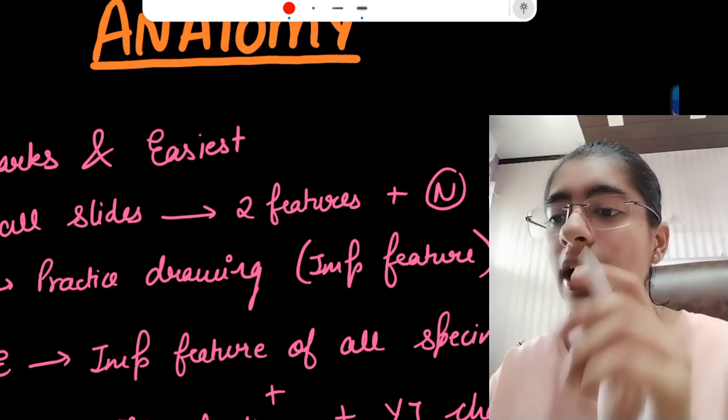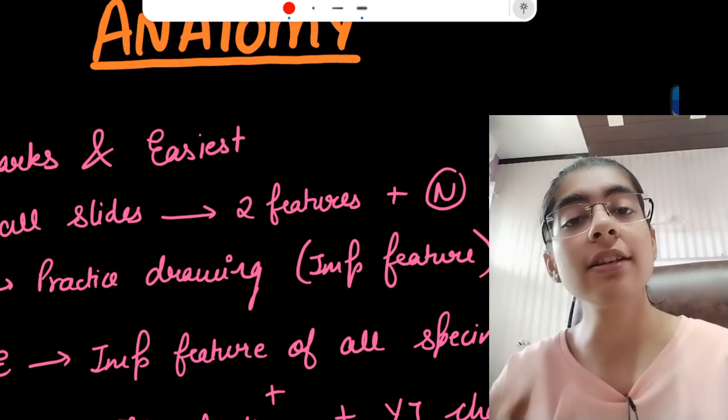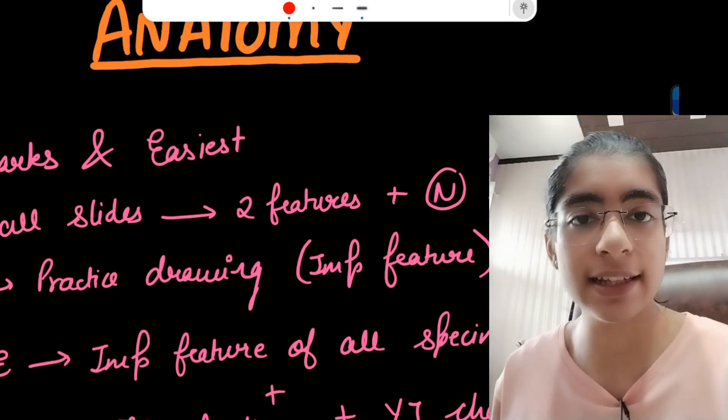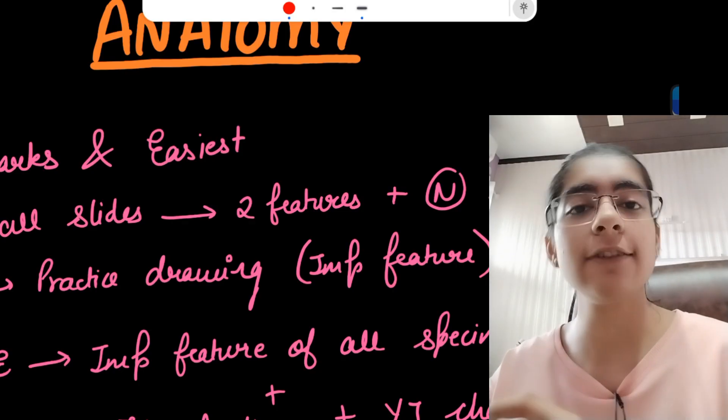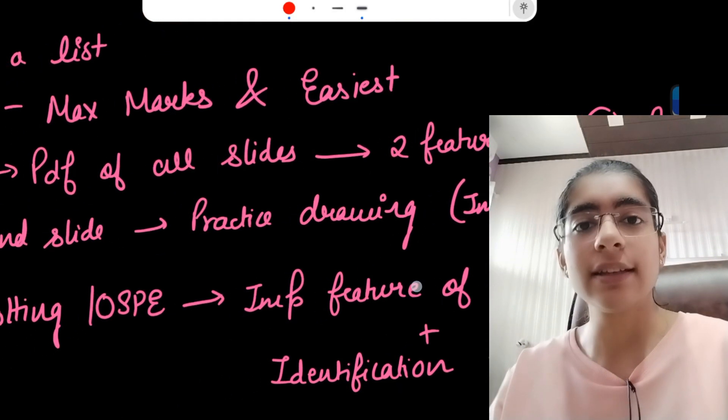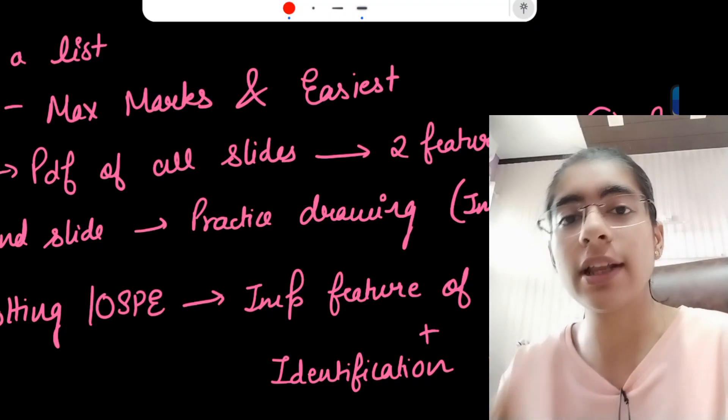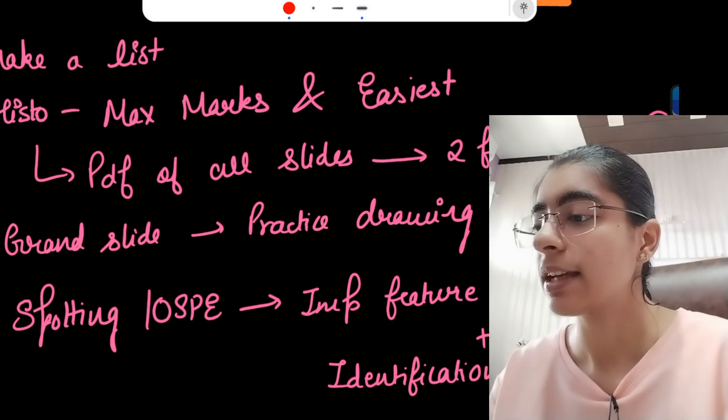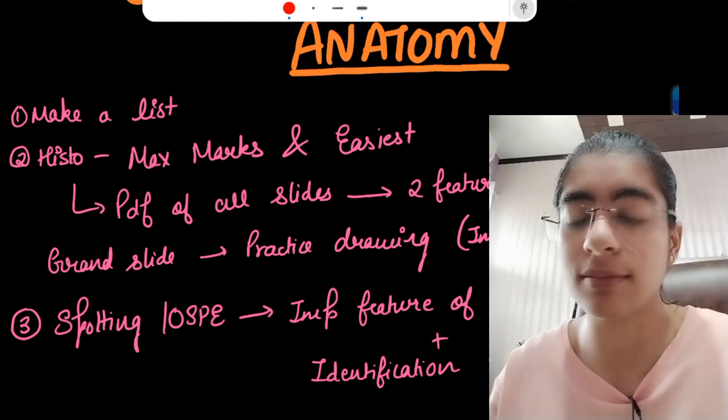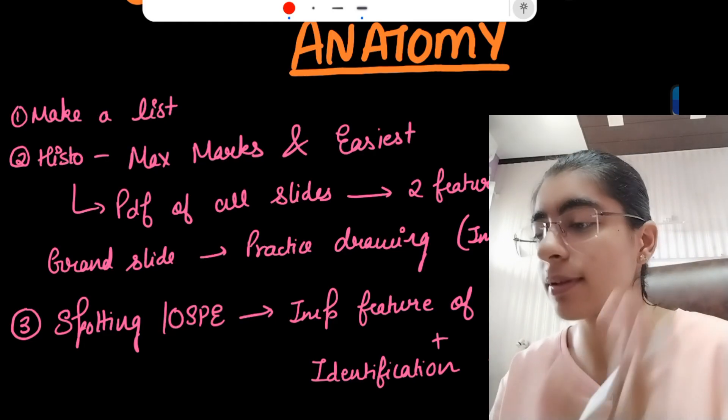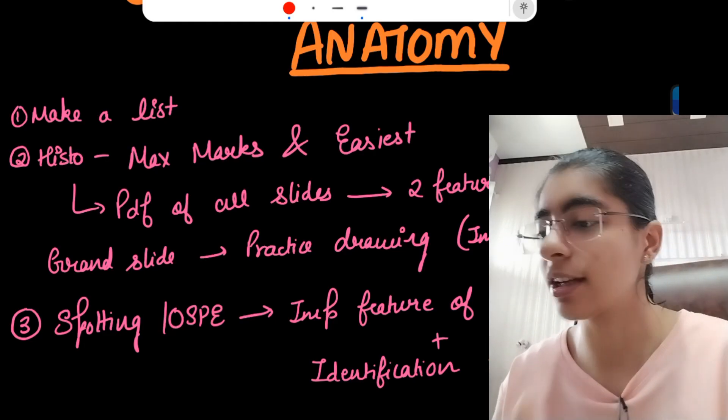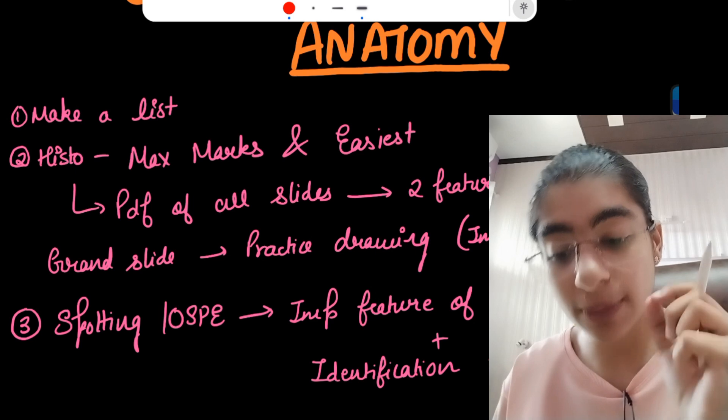Then you also need to write the normal locations where that hyaline cartilage is present. Similarly, for all the slides, make a list, write it in your notebook or annotate in the PDFs so that it will help you to revise. If you revise the whole IB Singh Histology book, that won't help.